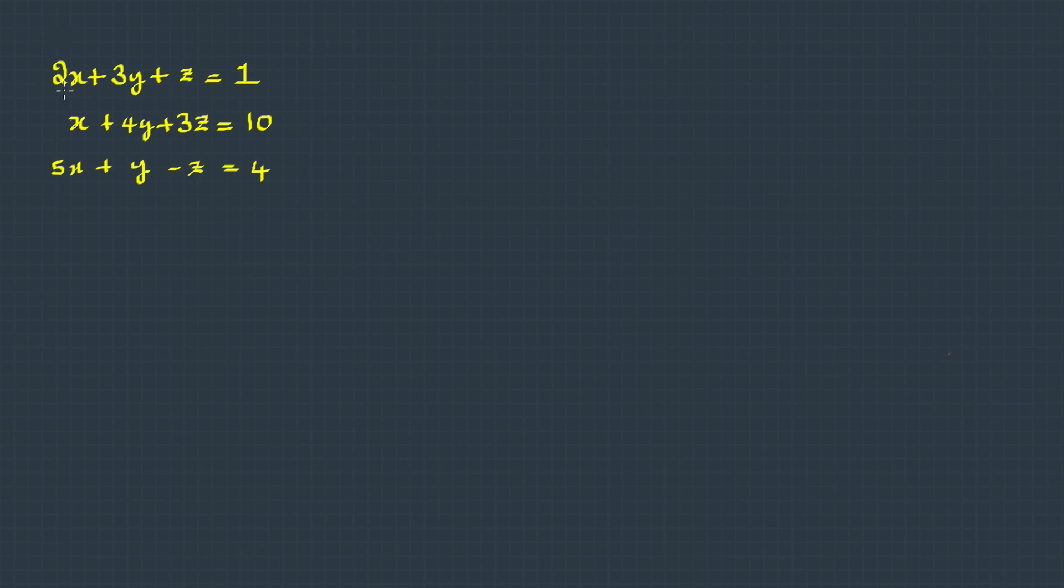We take the coefficients of the variables and put them into a matrix. Here we have the matrix notation for this set of equations—these two are equivalent. We have a matrix of coefficients, the variable matrix, then the resultant. If we multiply...